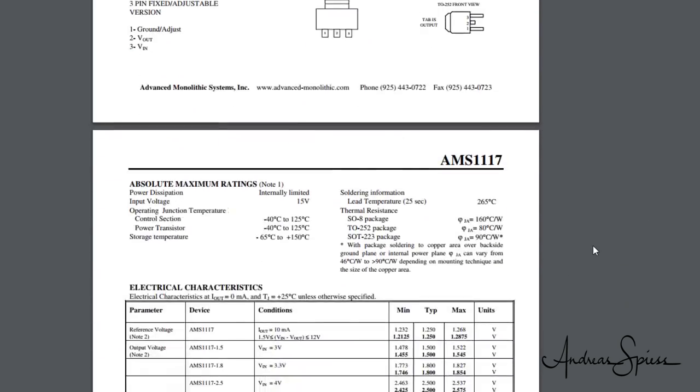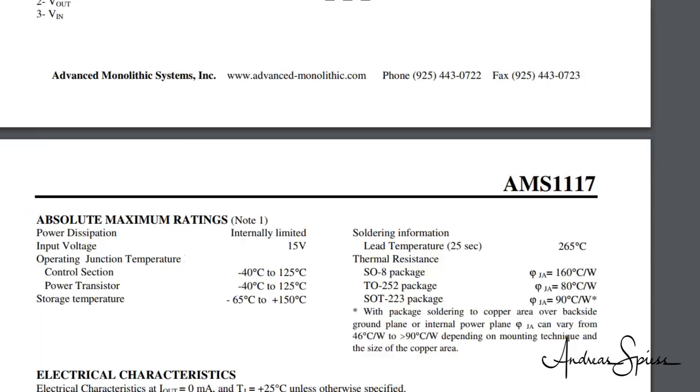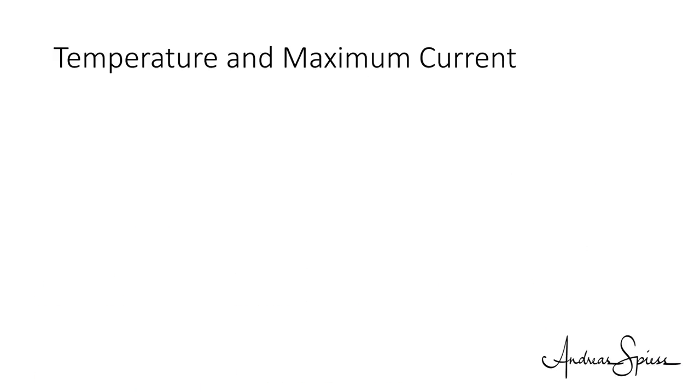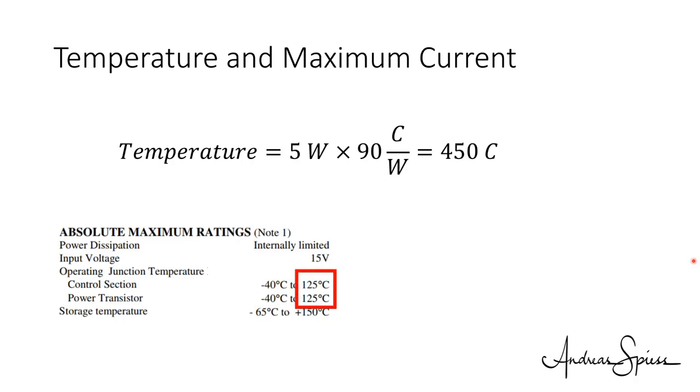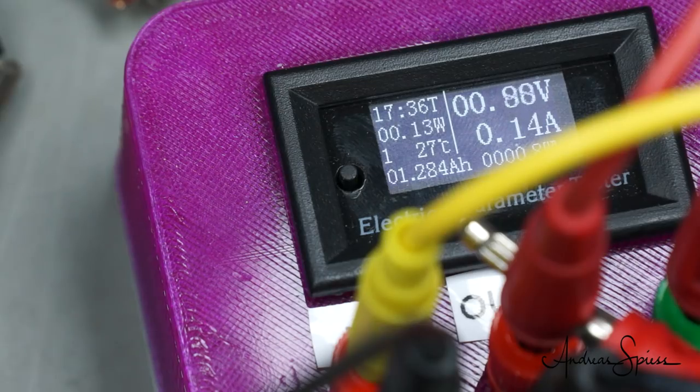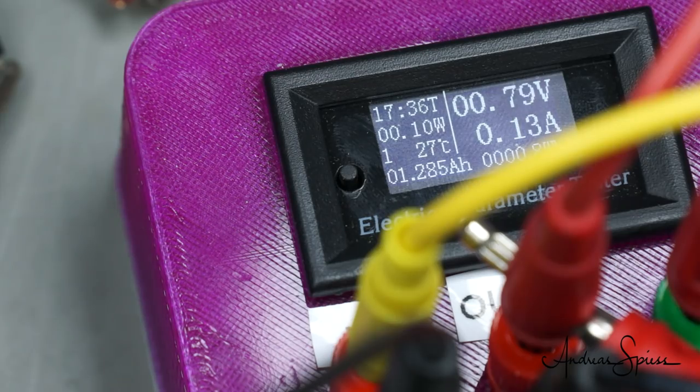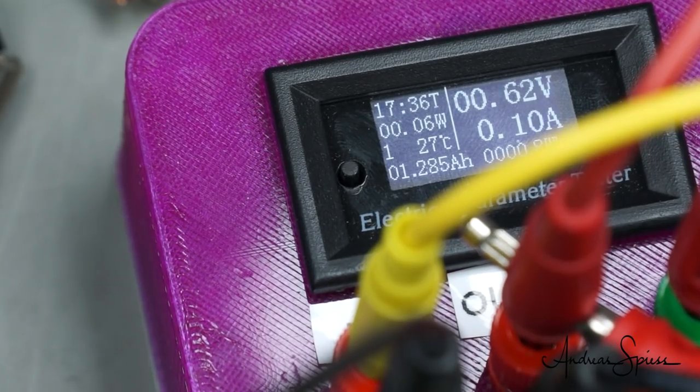Let's look a little closer to the datasheet. Here it says that our SOT232 package increases its case temperature by 90 degrees centigrade for each watt it has to dissipate. Let's do the calculation. The resistor had to dissipate 5 watts, and so does the AMS1117 now. Remember, linear regulators are only variable resistors with a controller. 5 times 90 equals 450 degrees. Like that, we could use our regulator as a soldering iron. But the datasheet also says the maximum junction temperature is only 125 degrees. This is why the internal protection immediately regulated the current down to a supportable value to protect the device. This time, fortunately, no magic smoke.